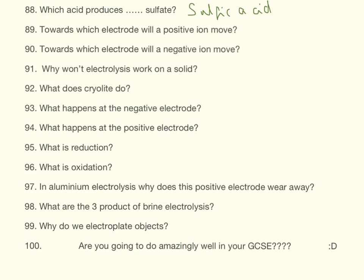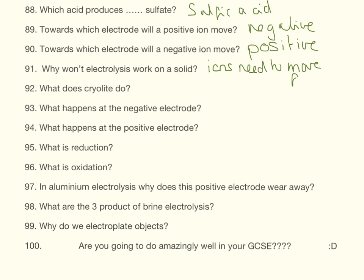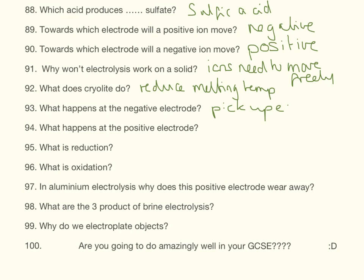Towards which electrode will a positive ion move? It will move towards the negative electrode because opposites attract, and the negative ions will move towards the positive electrode. Why won't electrolysis work on a solid? Because the ions need to move freely.